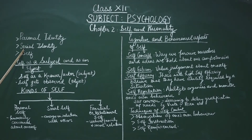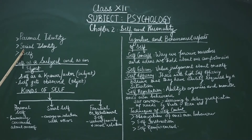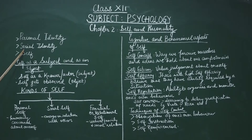Social identity, on the other hand, refers to those aspects of a person that link him to a social or cultural group — where you find your place in society. Maybe you are a part of a music group, a theatre group, or a dance group. So that is your social identity.